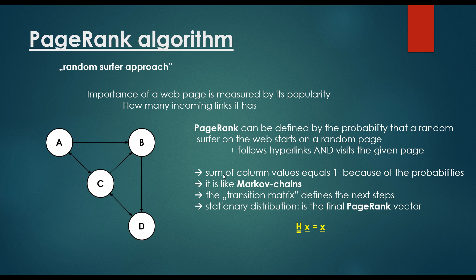We are going to end up with the same transition matrix with the column stochastic feature, but this is the random surfer approach, random surfer model. So sum of column values equals to 1 because of the probabilities, this is what we have been discussing.